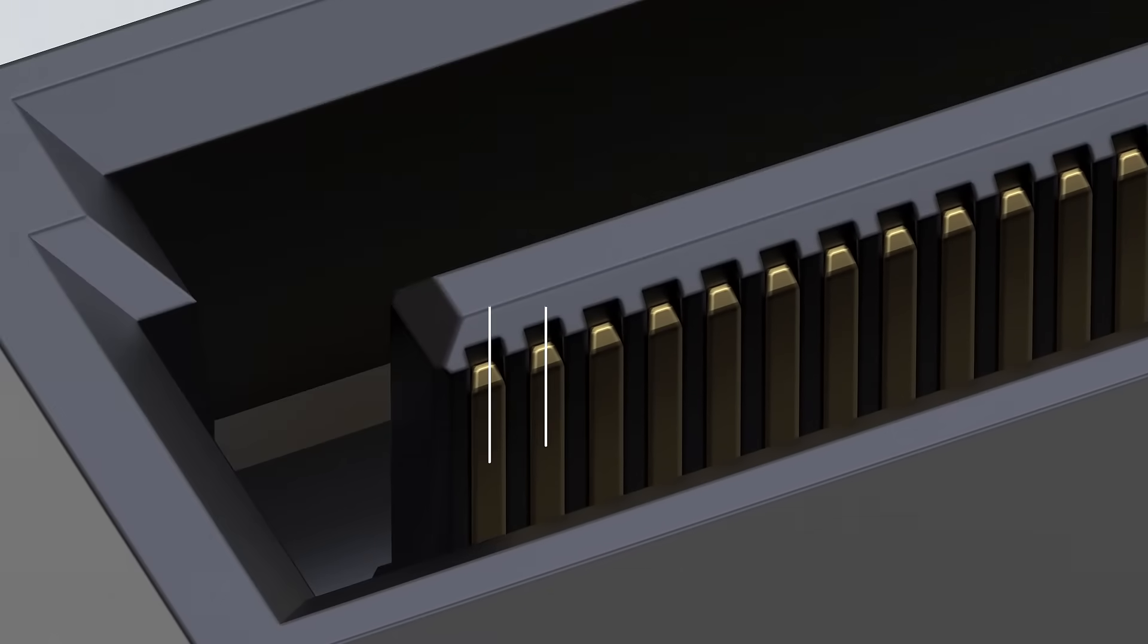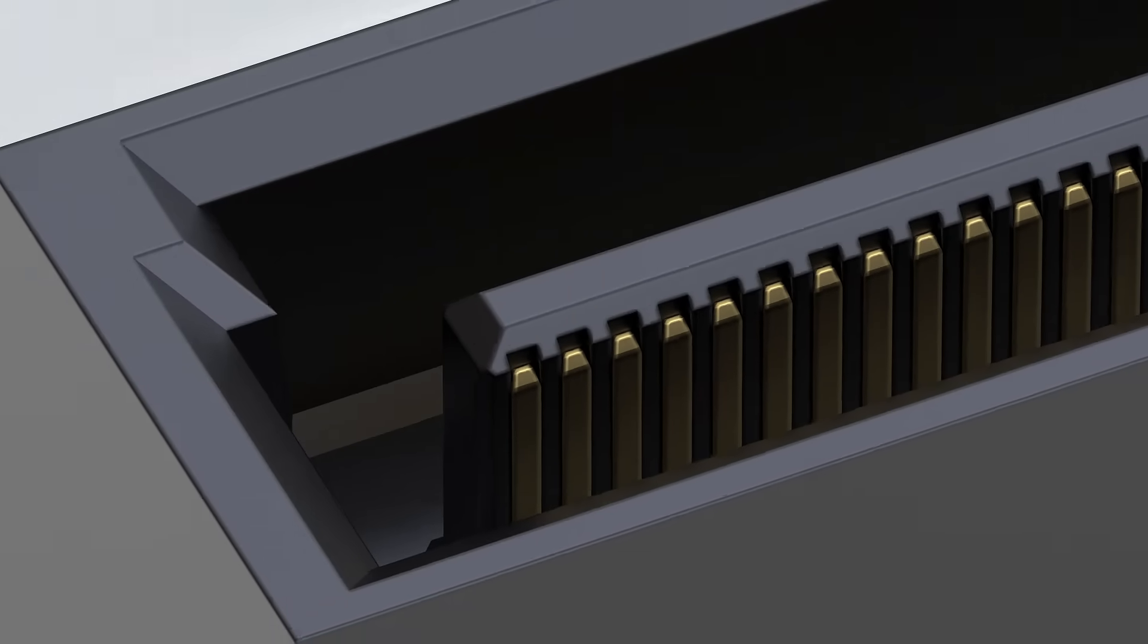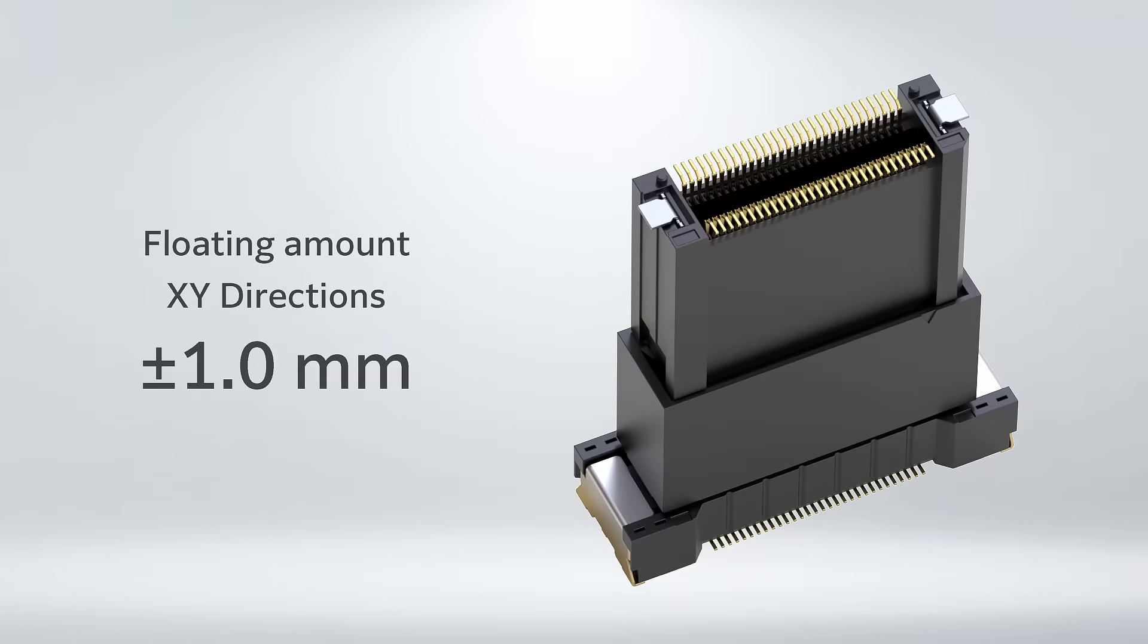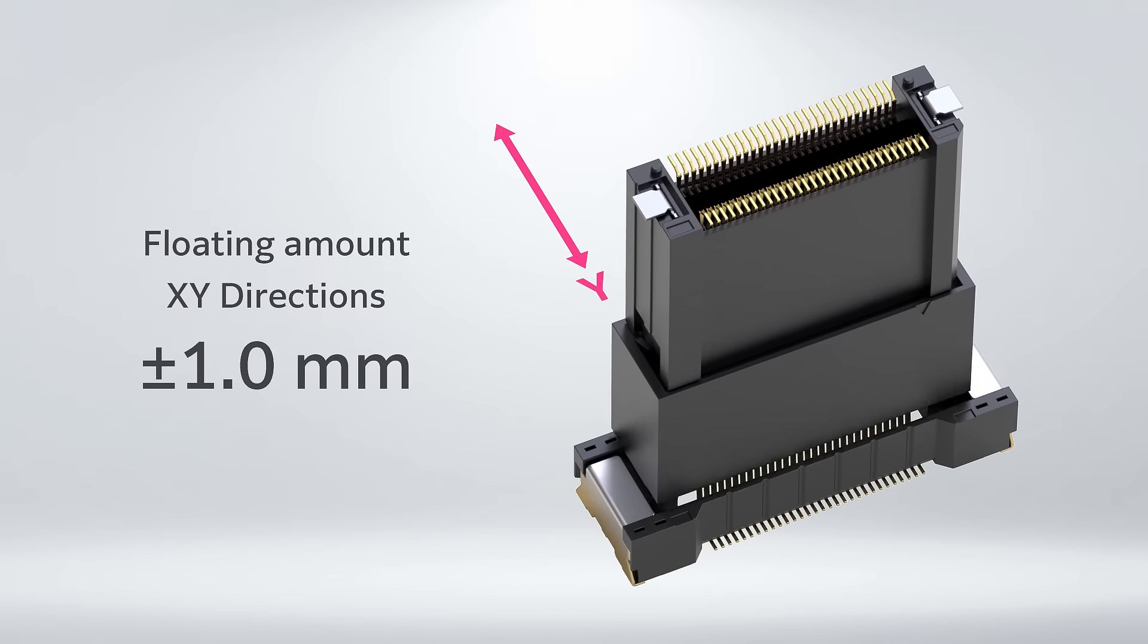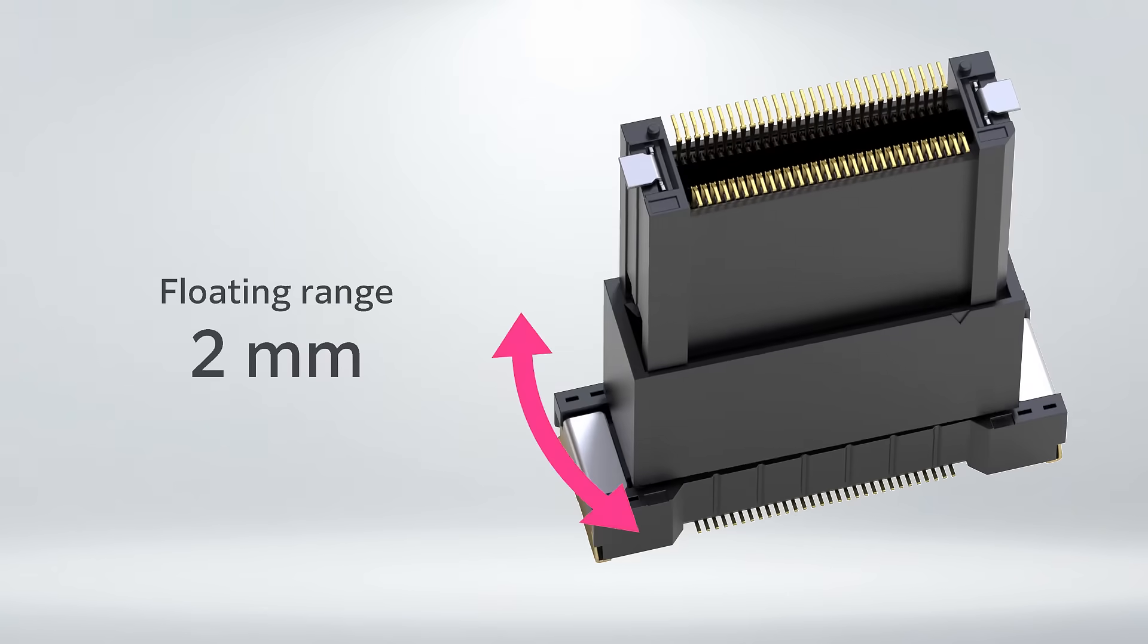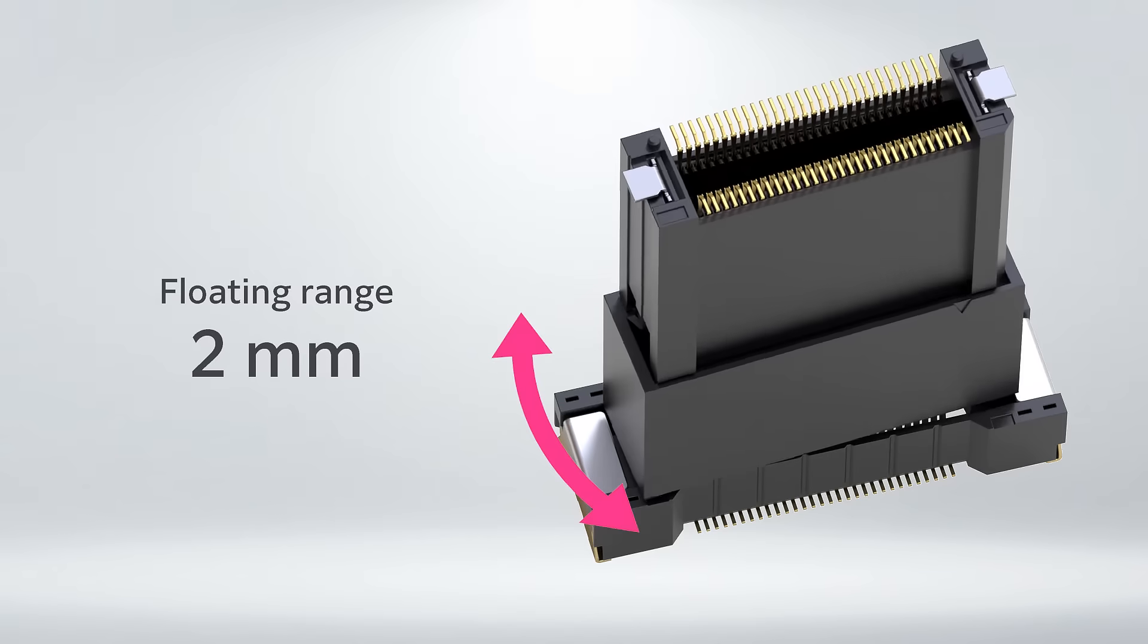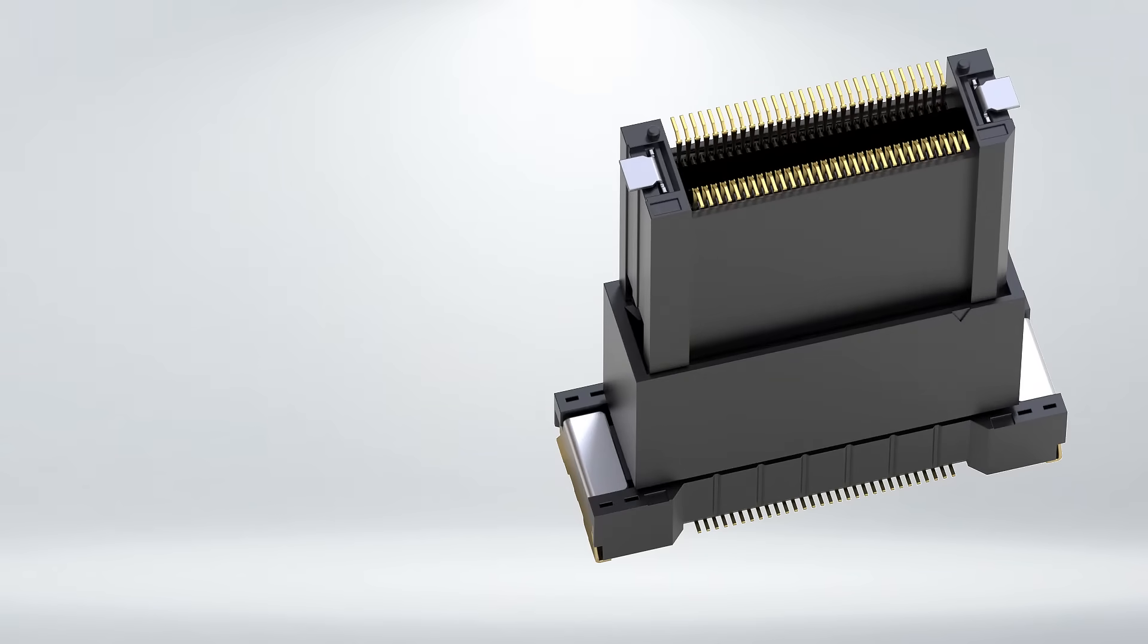DT High Stack Type is a 0.5mm pitch floating connector. The floating amount is ±1mm in the XY directions. Compared to the floating amount of ±0.5mm of DT Series, this type has achieved twice the range of motion.